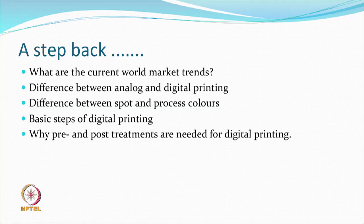Last time we started some discussion on a new method of printing, which is inkjet printing, and we will continue with that for a few more hours. In summary, we talked about the place of digital printing, how to differentiate between digital and analog printing, the difference between spot colours and process colours, and some basic steps used in digital printing. We realised that pre and post treatments may be required because the chemistry of the fibre and the chemistry of the dyes have to be matched.